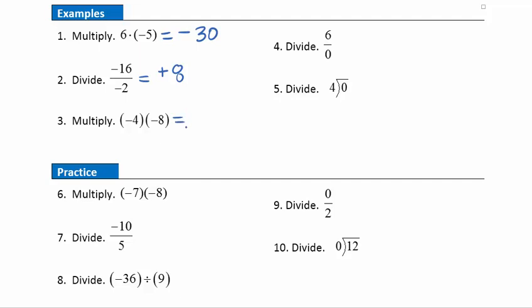Question 3: we're asked to multiply negative 4 times negative 8. Same signs, so that's going to give me a positive answer. 4 times 8 is 32, so the answer is positive 32.